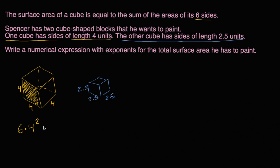And then the same logic for the surface area of this cube. The area of each of the sides is going to be 2.5 times 2.5, or we could write that as 2.5 to the second power. And there's going to be six sides to the cube. So it's going to be six times 2.5 squared. So a numerical expression with exponents for the total surface area has to paint. Well, that's the surface area of both cubes. This is the surface area of the yellow cube. This is the surface area of the blue cube. And we are done.